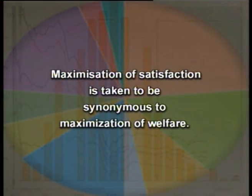Once we have decided how to distribute our resources among the various activities, the next problem would be how to distribute the output or the product that we have produced among the people, in such a manner that satisfaction is taken to be equivalent to maximization of welfare. The next problem would be how to distribute these goods that we have produced in a manner that will maximize our satisfaction.